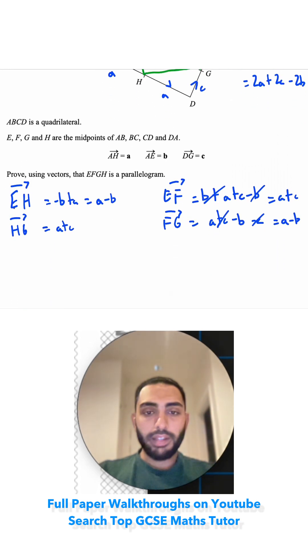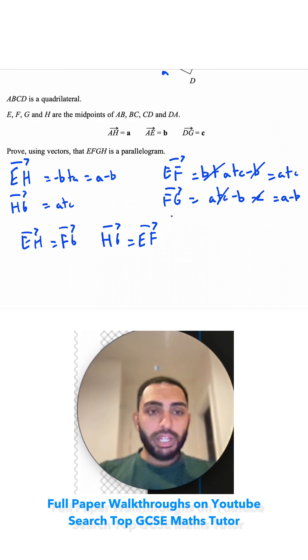Now I can see that EH is the same as FG, and HG is the same as EF. That's telling me that EFGH is a parallelogram.